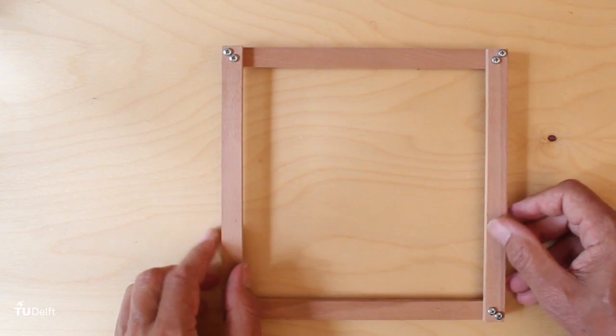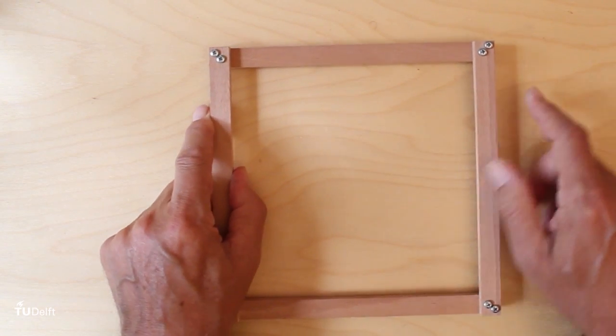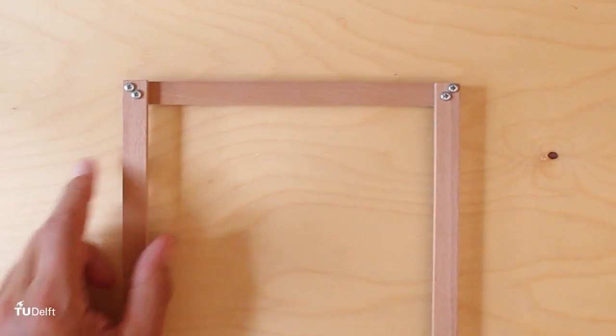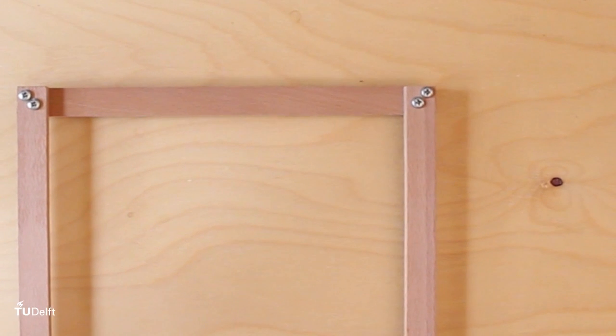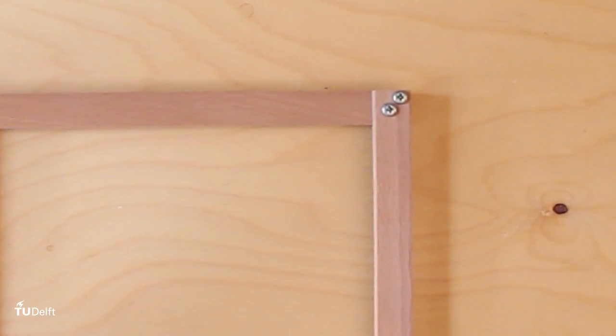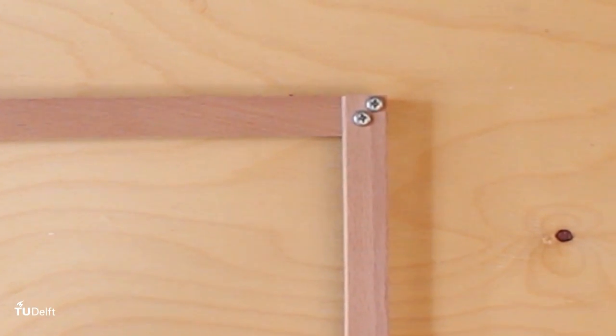Instead of making a brace frame, we can make a rigid frame. In this method, we need to make at least one of the corners in the frame fixed in such a way that the connected parts can't rotate, that the connection is rigid and can take a bending moment.